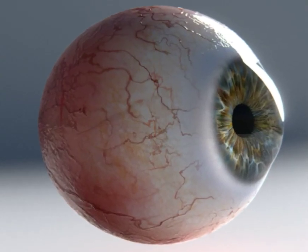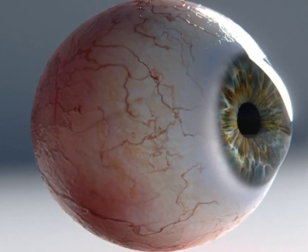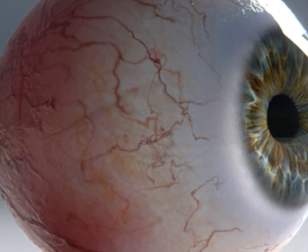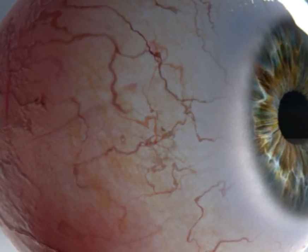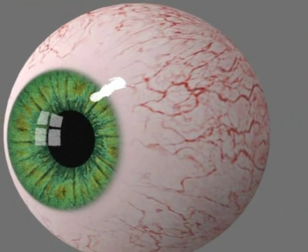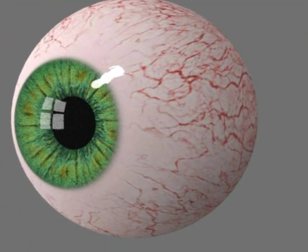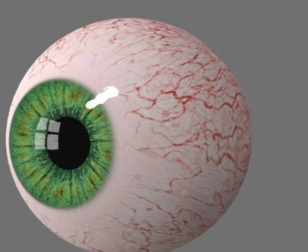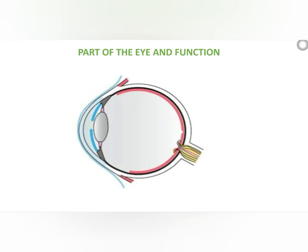The eye is one of the most complex sense organs. It aids visualization of objects, light, color, and perception of depth. Today's video will talk about the structure and the function of the various components of the eye. This diagram shows a cross-section of the eye, allowing us to observe the internal structures of the eye.